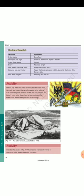Box 3: Meanings of the symbols. Attribute — Significance: Broken chains — Being freed. Breastplate with eagle — Symbol of the German empire, strength. Crown of oak leaves — Heroism. Sword — Readiness to fight. Olive branch around the sword — Willingness to make peace. Black, red and gold tricolor — Flag of the liberal nationalists in 1848, banned by the dukes of the German states. Rays of the rising sun — Beginning of a new era. With the help of the chart in box 3, identify the attributes of Veit's Germania and interpret the symbolic meaning of the painting. In an earlier allegorical rendering of 1836, Veit had portrayed the Kaiser's crown at the place where he has now located the broken chain. Explain the significance of this change.